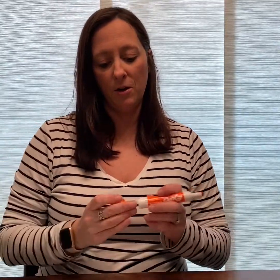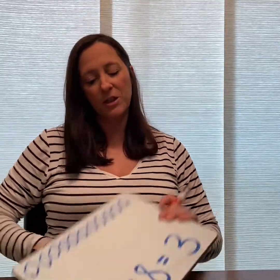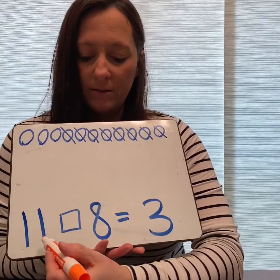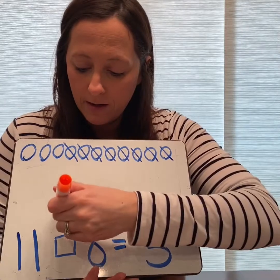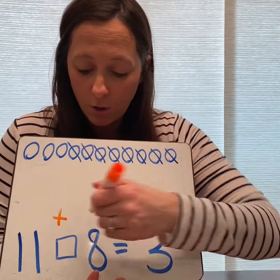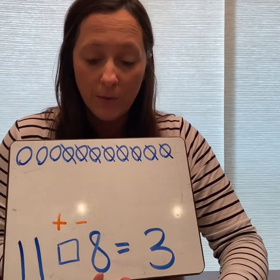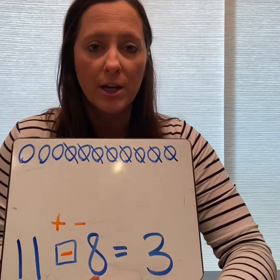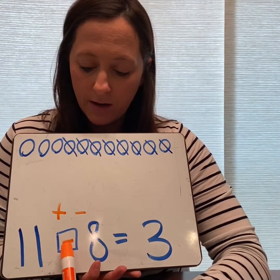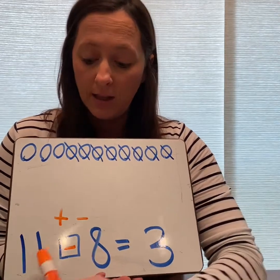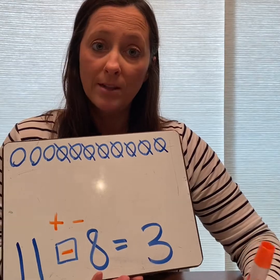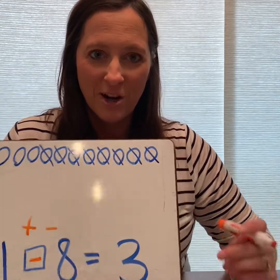My equation looks like this: eleven minus eight equals three. Did we add more or cross off? We crossed off — it's a minus, subtraction. Eleven minus eight equals three. Eleven minus eight is three. Good work! I will see you guys tomorrow for math lesson number eight. Have a good day!